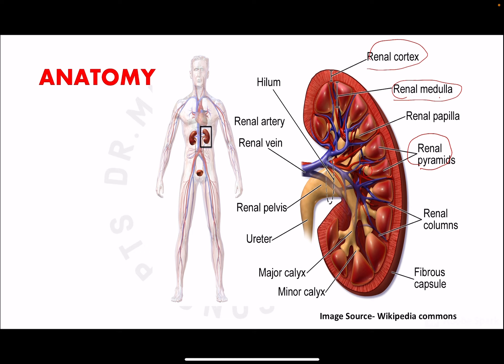The renal papilla opens into the minor calyx, the minor calyx opens into the major calyx, and the major calyx continues into the pelvis, which further continues to the ureter. This junction is called the pelviureteric junction.